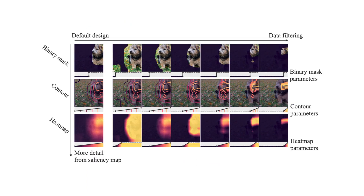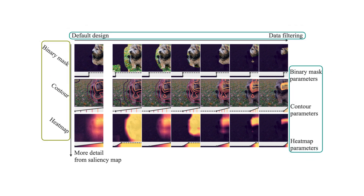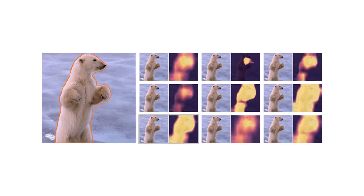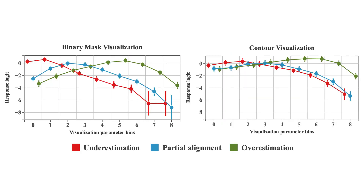We study human perception of visual explanations, considering different visualization methods designed with a variety of parameter choices, and conducted a user study to assess alignment judgment under different parameter settings. Our results show how visualization methods, their parameters, and characteristics of saliency maps impact human judgment.